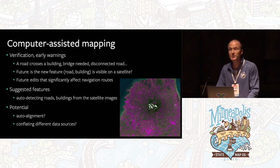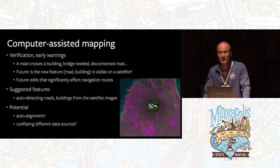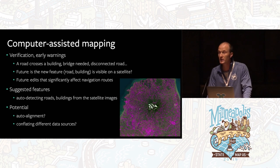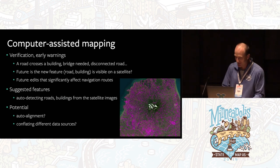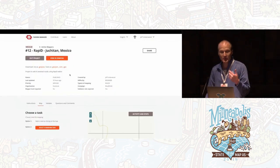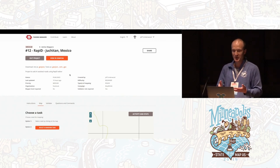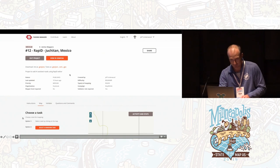Here at Facebook we experiment a lot with machine learning methods for mapping. We share it with the community and get feedback — sometimes very direct, very passionate feedback that we take into account. This year, we think we figured something out. We released Rapid several weeks ago — it's a machine learning-assisted map editor, and this is how it works.